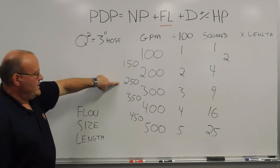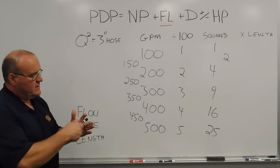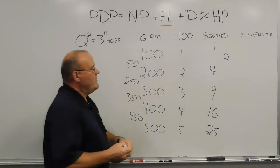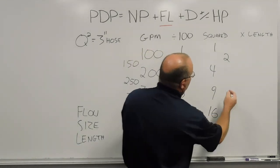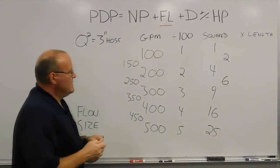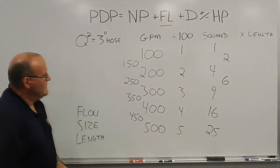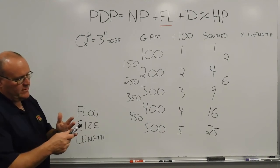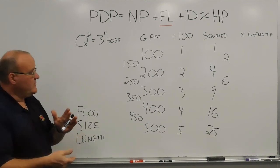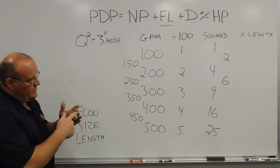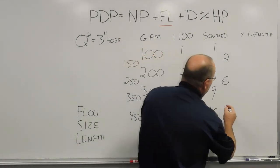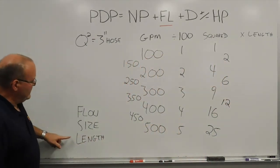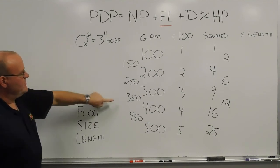For 250 gallons a minute: 100, 200, 300 — 250 falls between 2 and 3. Cross-multiply 2 times 3 gives 6. So for every 100 feet of 3-inch hose flowing approximately 250 gallons a minute, that's 6 pounds of friction loss. For 350 gallons a minute: 100, 200, 300, 400 — 350 falls between the two. Cross-multiply 3 times 4 gives approximately 12 pounds of friction loss for every 100 feet of 3-inch hose flowing 350 gallons a minute.